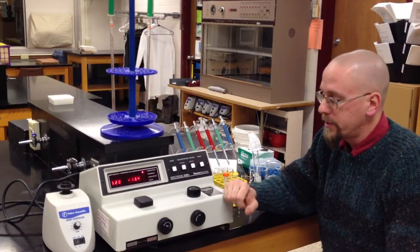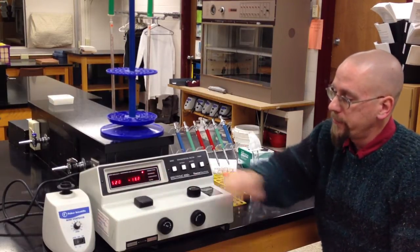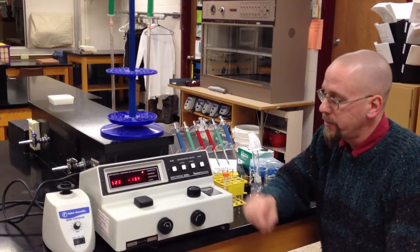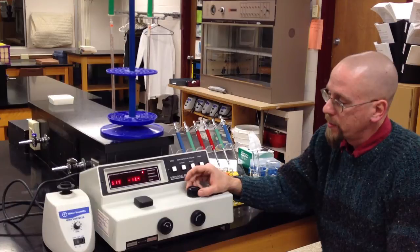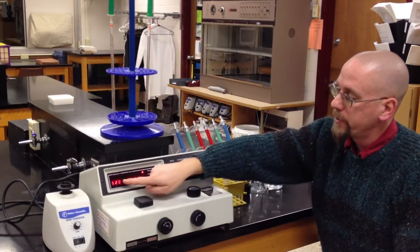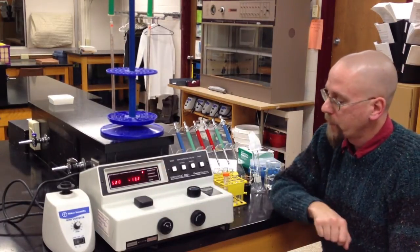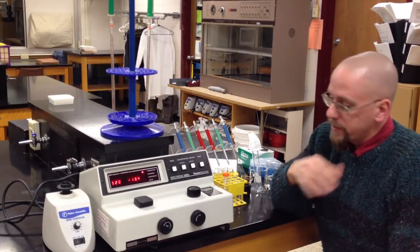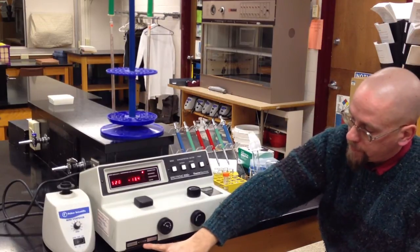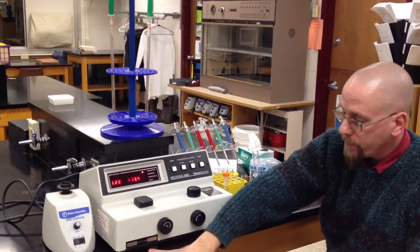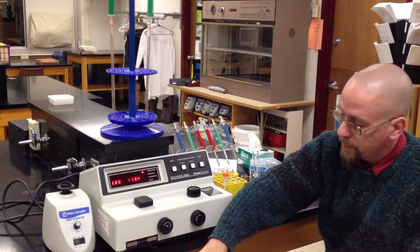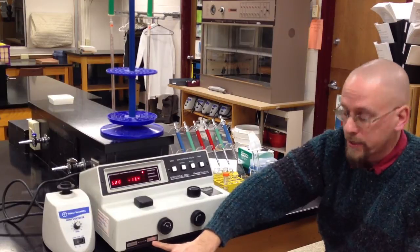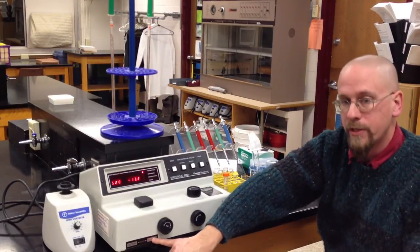What you need to do with these is set the wavelength. Our wavelength for our experiments will be 620 nanometers. You use this dial on the top here to set your wavelength reading at 620. Then make sure down in the front the filter switch is in the 600 to 950 nanometer range.